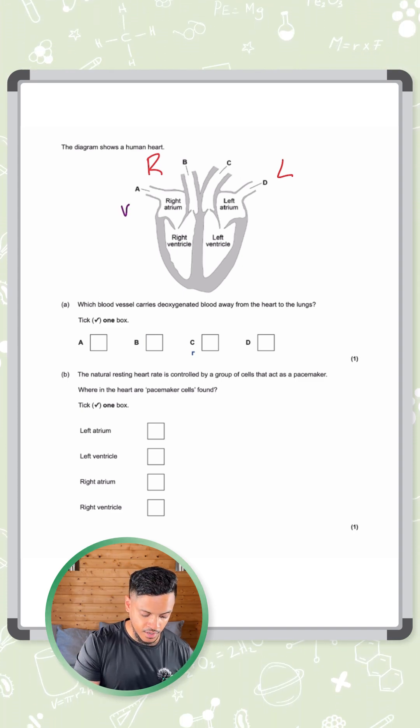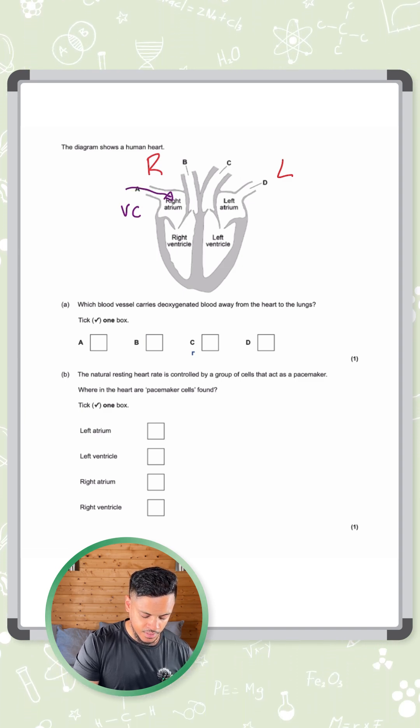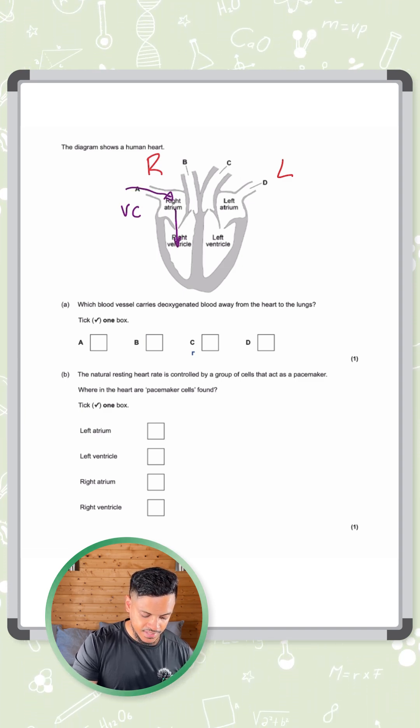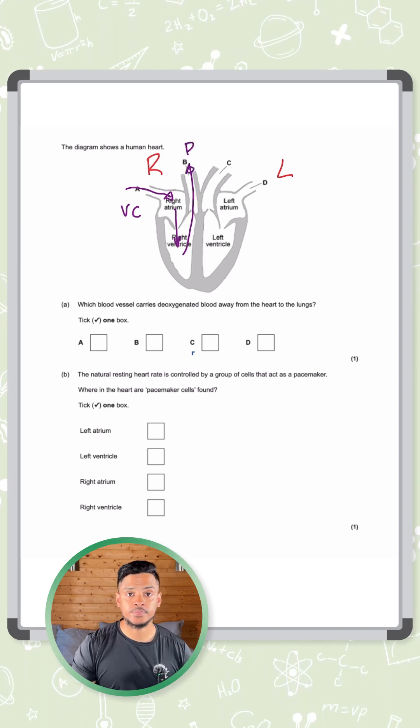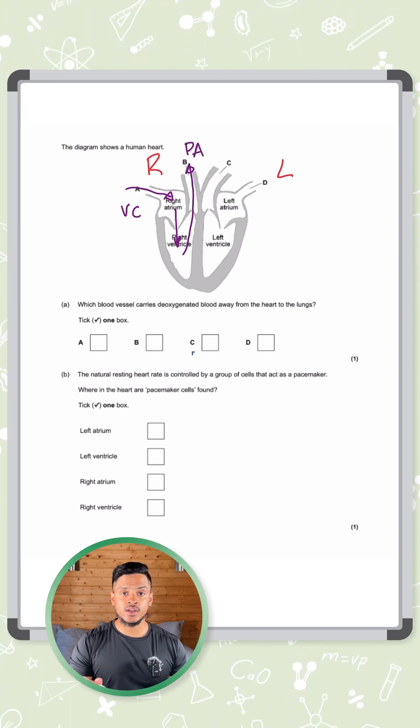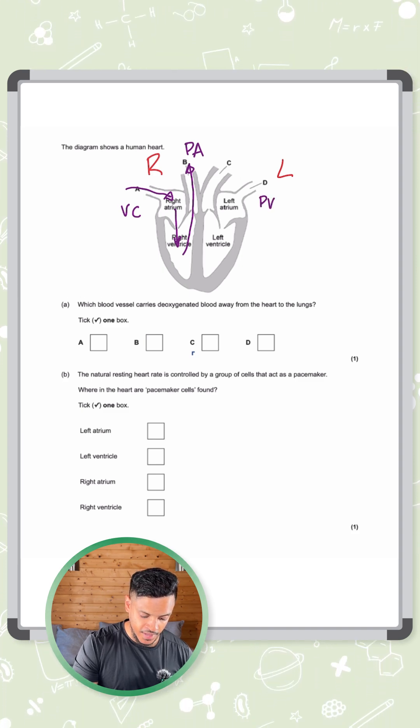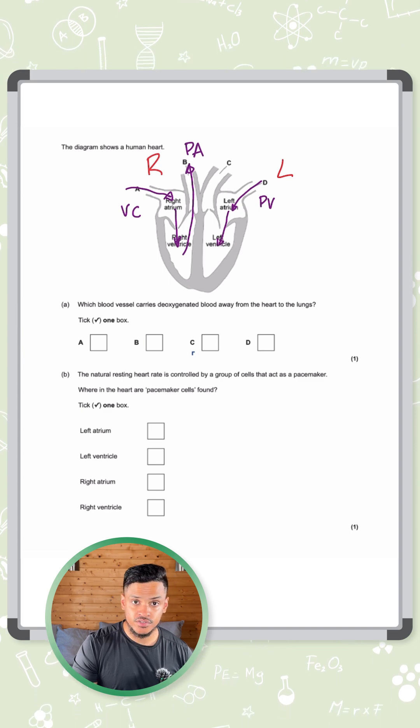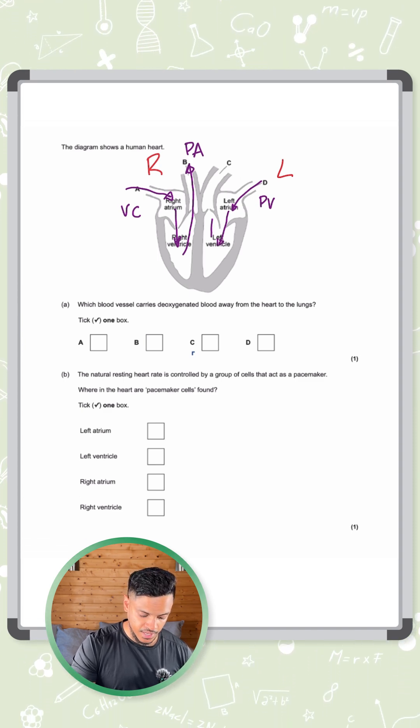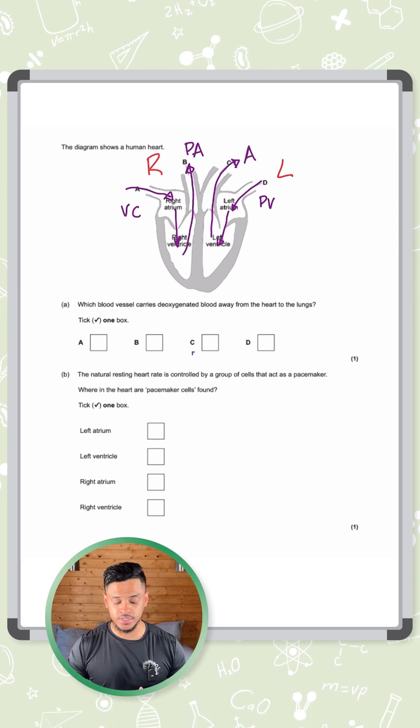It comes in through the vena cava—that's A—into the right atrium, then down to the right ventricle, and comes out of the pulmonary artery. Once it's gone to the lungs, it comes back through D, which is the pulmonary vein, into the left atrium, down the left ventricle, and this one gets pumped out of C, which is the aorta, and then it goes to the rest of the body.